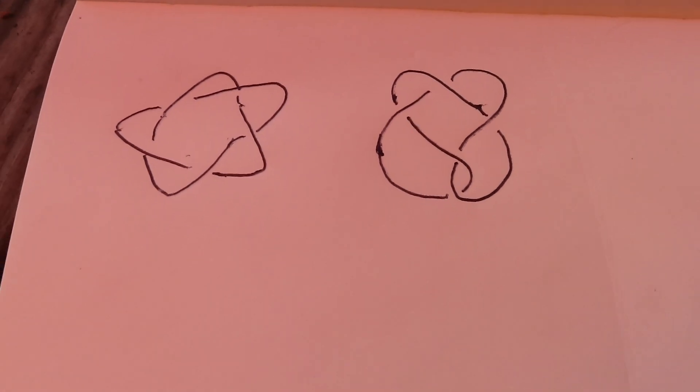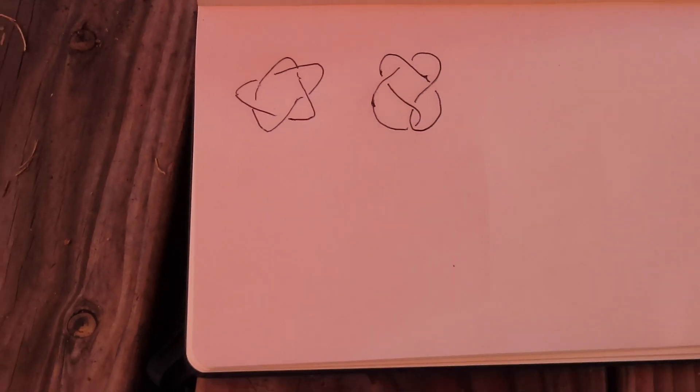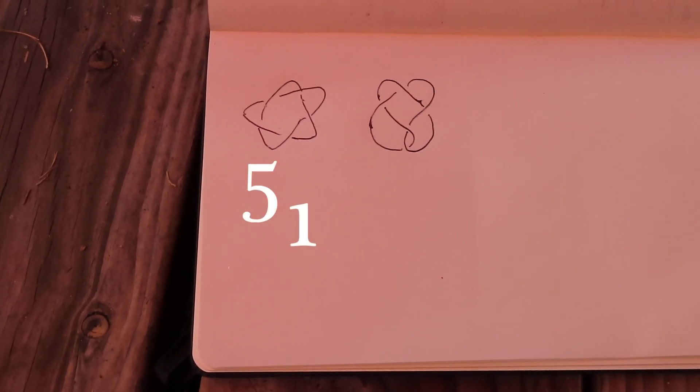With 5 crossings there are actually 2 distinct prime knots. And this one, which some naming nerds might call the cinquefoil, is probably the easier of the two to tie. So let's tie in.